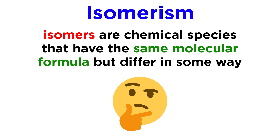The word isomerism refers to isomers, which are chemical species that have the same molecular formula but differ in some way. The way in which isomers differ depends on what kind of isomers they are, so let's learn about the different kinds of isomers.